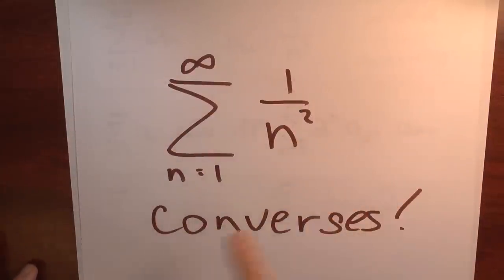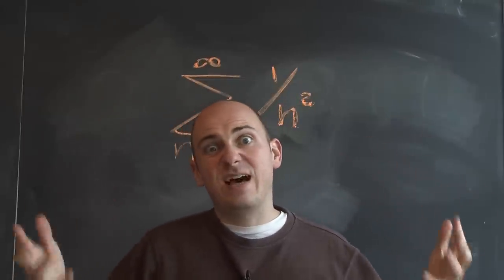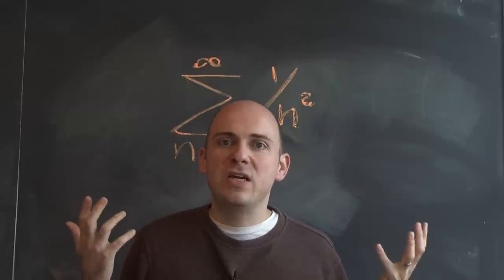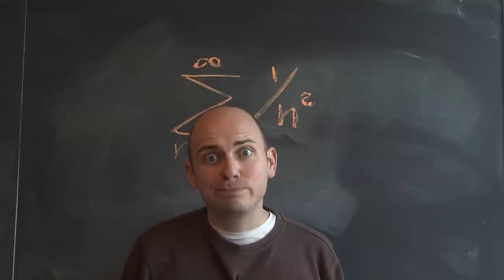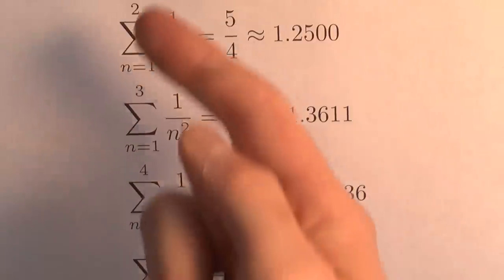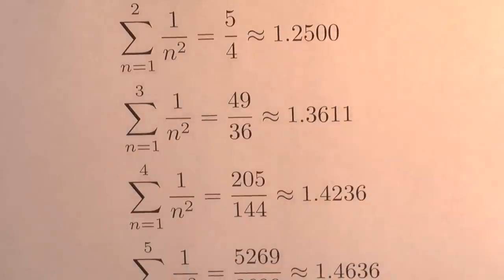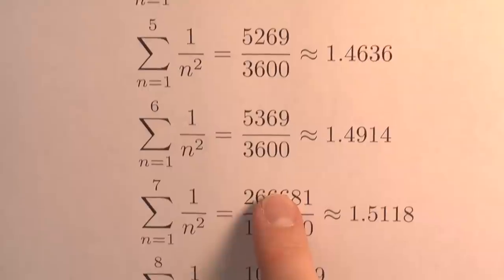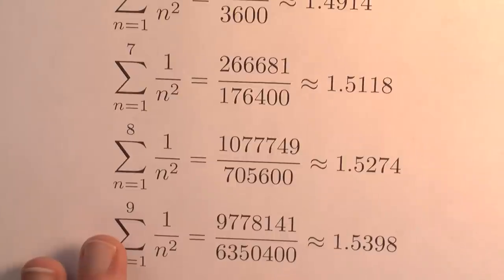The sum of 1 over n squared, n from 1 to infinity, converges. Usually we're happy just knowing that a series converges or diverges, but in this case we can ask the more refined question: to what does this convergent series converge? Numerically, the sum of the first two terms — 1 over 1 squared plus 1 over 2 squared — is 5 quarters. Continuing with the first three, four, five, six, seven, eight, nine terms gives a value a little over 1.5.